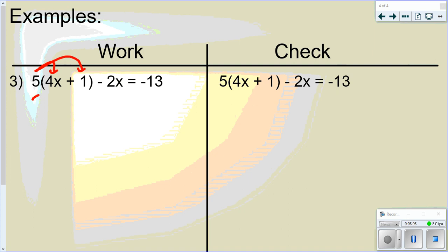5 times 4x is 20x. 5 times 1 is 5. Minus 2x equals negative 13. Step 2 is to combine like terms. So I can combine the 20x and the minus 2x. So remember, this symbol goes with the 2x. So 20x minus 2x gives me 18x. And I still have the plus 5.